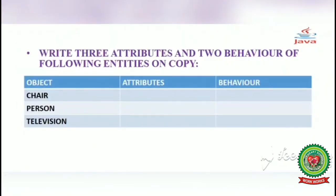Students, you have to write three attributes and two behaviors of the following entities in your copy: the first object is chair, the second is person, and the third is television. Write in the same way as discussed in the previous slide.